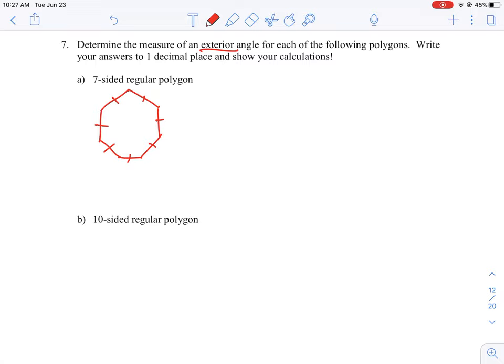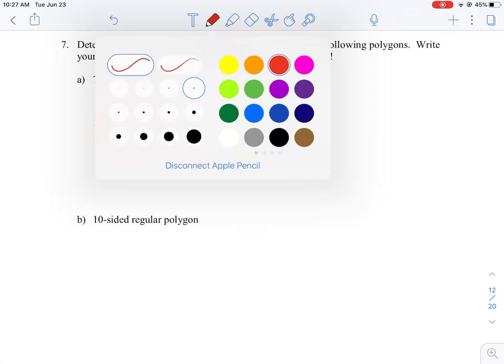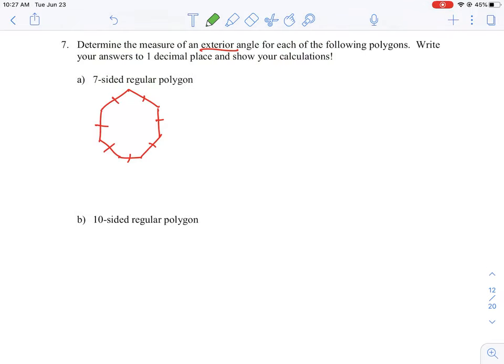Okay, and then we're looking at trying to find the exterior angle. So I'm just going to change colors here for a second. If we're looking to find an exterior angle, we extend out one of the sides of the shape.